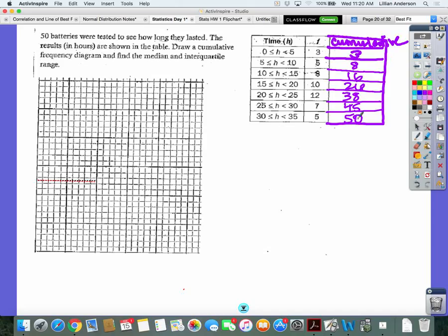Let's make sure we label our graph. We always want to make sure that we do that. Our bottom, our horizontal axis, is going to be what? Time. Time, and our vertical is cumulative frequency. So we're drawing a cumulative frequency diagram, so we need to have cumulative frequency and then time. Always make sure you label, no need to lose points. Easy.